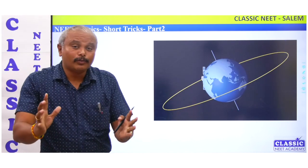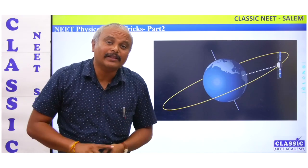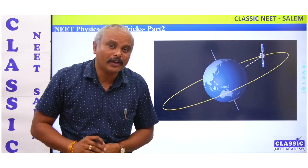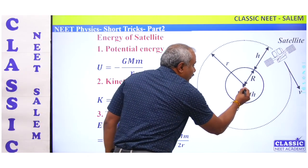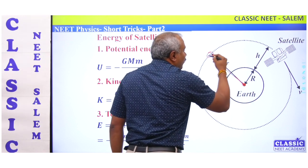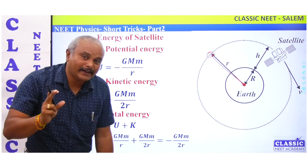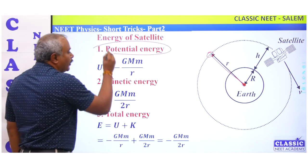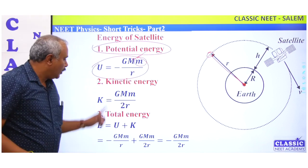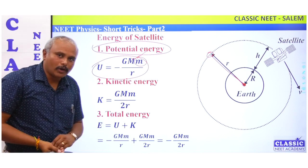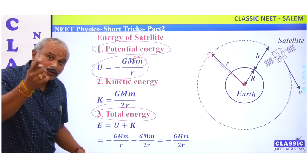Once there is a conservative field, that object is bound, and that energy is negative energy. You can see that as it is binding, there is a radius and a velocity. Potential energy is minus GMm by r. Kinetic energy is GMm by 2r. If you add kinetic plus potential energy, you get total energy. Total energy is negative.